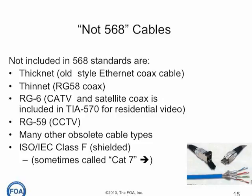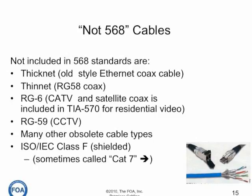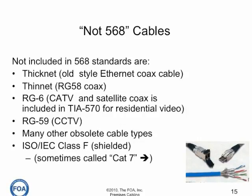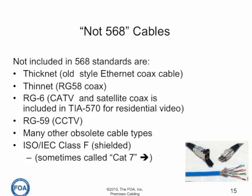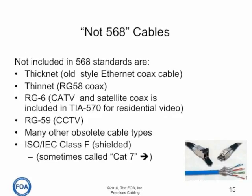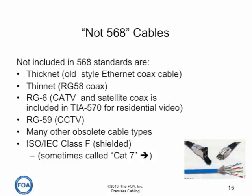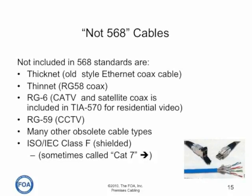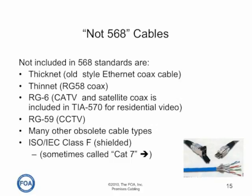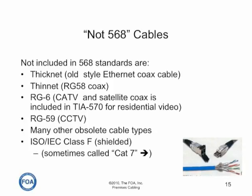Numerous cables that have been used for networking and voice over the years are no longer included in 568 and 11801 international standards. Not included are any of the coax for thick net — the old Ethernet coax cable — or thin net, the smaller Ethernet cable; satellite or cable TV coax RG6; RG59, which is typically used for closed circuit television; and many other isolated cable types like the IBM cabling. Also not included at the current time is the ISO IEC class F, which is a shielded cable sometimes called category 7. As of this video, category 7 is finally being considered by the TIA in the US, but is not yet a standard.